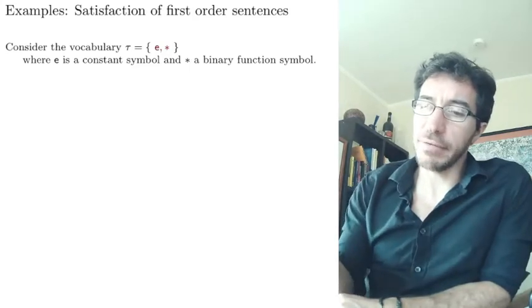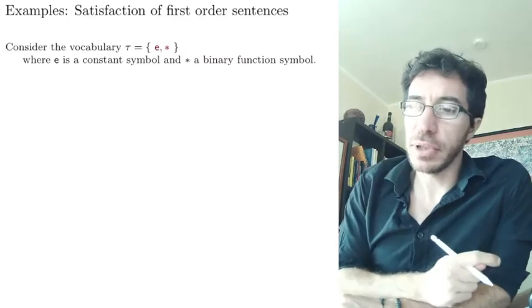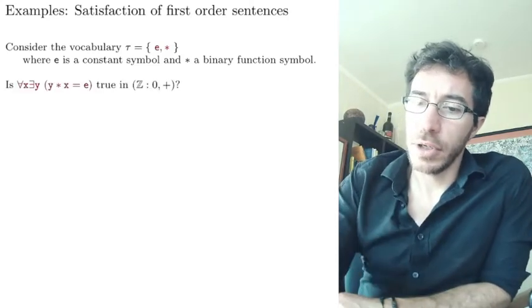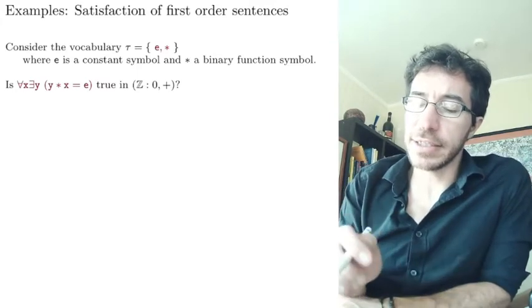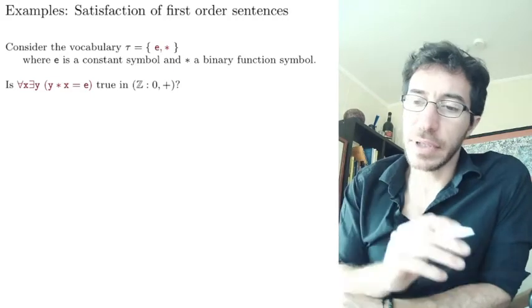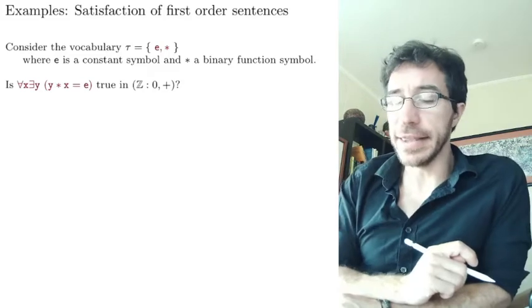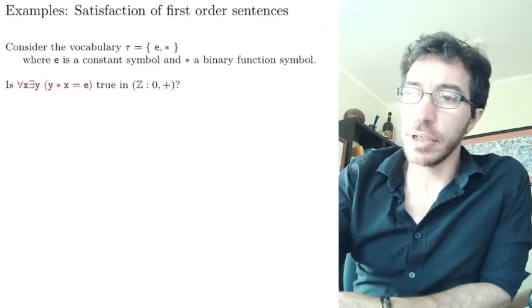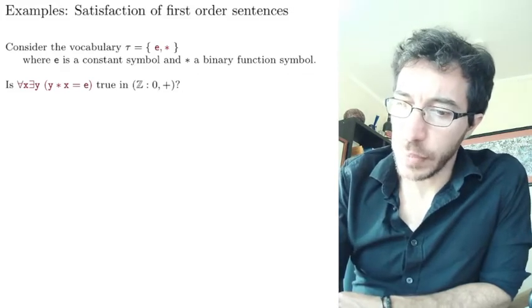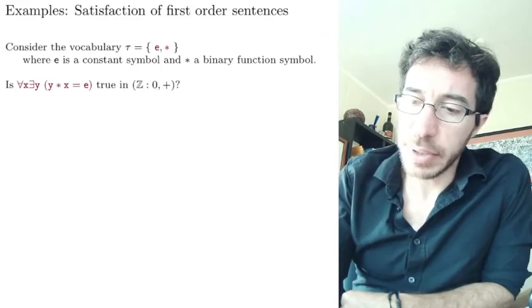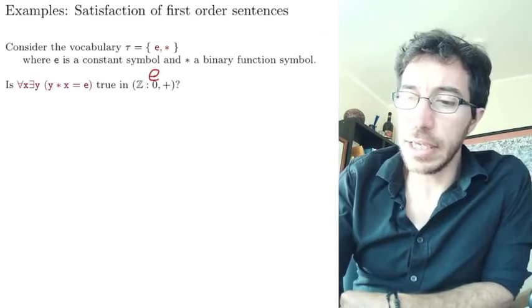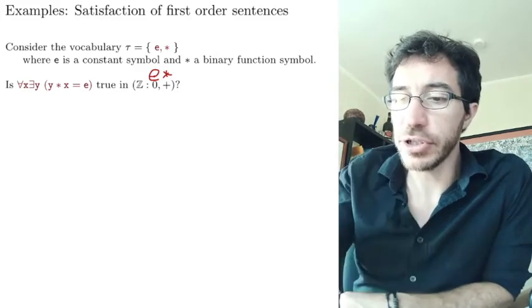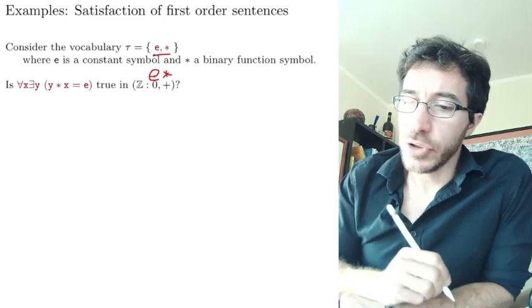So consider the case when we have this vocabulary of groups essentially, one constant symbol and one binary operation that takes two elements and gives out one. Let me ask you a few questions. Let's consider this formula: for every x there exists a y such that y times or star x equals e. Is it true in the structure Z, 0, plus? So what do I mean here by this? I'm gonna explain what this means in a second. This means we're talking on Z, the integers, the integer numbers, and when we are, this is a guy that zero represents e and star represents plus. Plus is the operation, the addition operation on the integers and zero is the zero of the integers. So that's how we are interpreting the e and the star of the language.